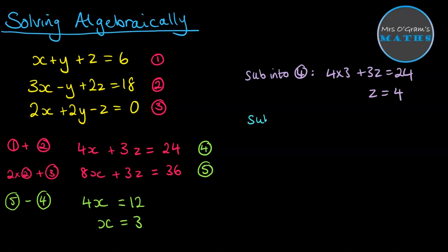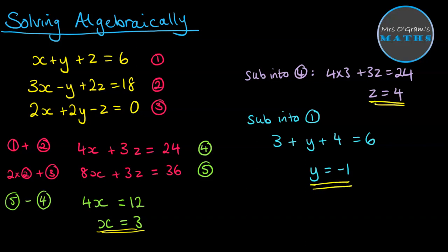And finally, we substitute into one of the original equations to get y. I'm going to use equation one because it's the simplest. So we get, oops, we know what x is. We've got three plus y plus four equals six. So therefore y must be minus one. And now we have all of our solutions. X is three, z is four, y is minus one.